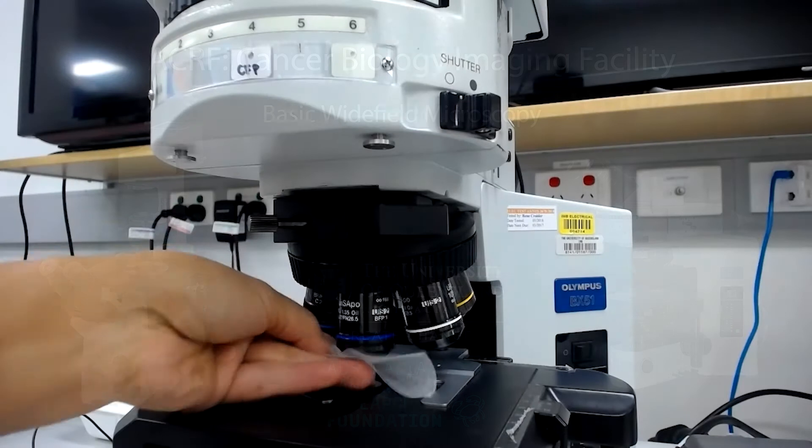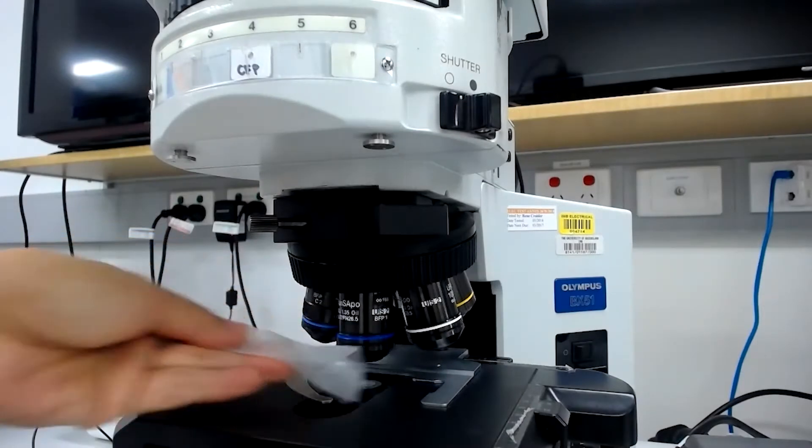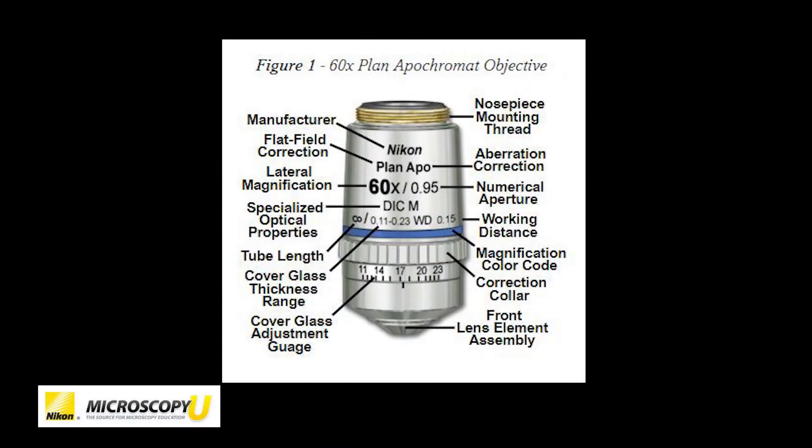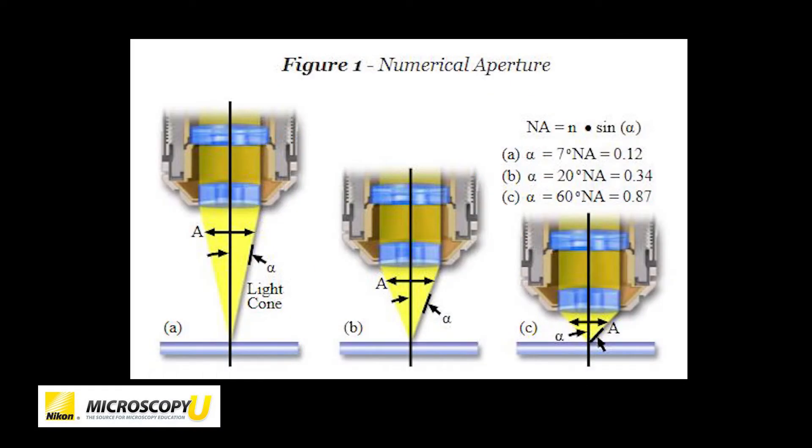It is your responsibility to check the cleanliness of your objective before imaging. The numerical aperture of a microscope objective is a measure of its ability to gather light and resolve fine specimen detail at a fixed object distance.